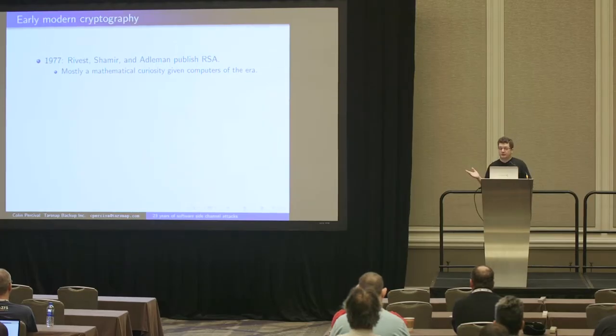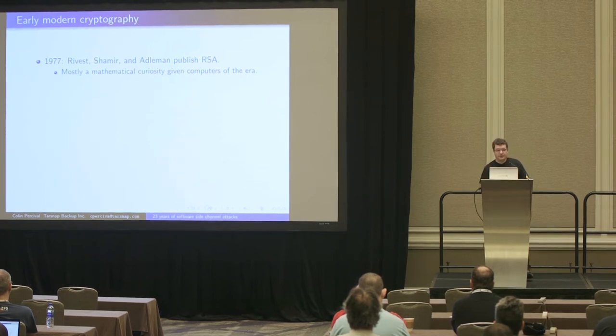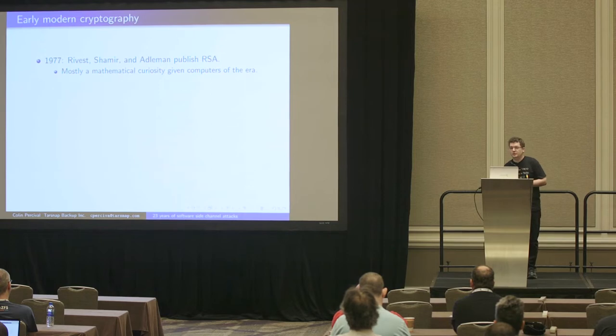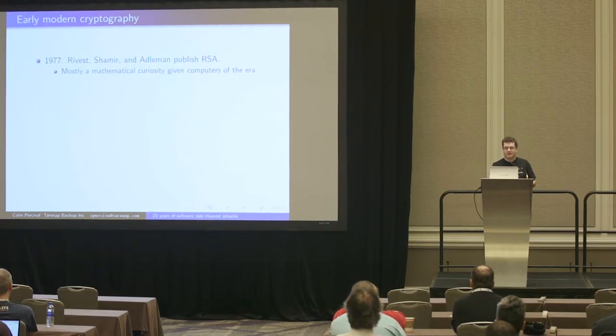So I said 23 years of history. Well, I'm going to start 42 years ago. 1977, Rivest, Shamir, and Adleman published the RSA cryptosystem. This was the first published asymmetric cryptography system. In fact, it had been discovered in the UK, I think, four years before this. But it wasn't published. People inside GCHQ tend to not publish their research. At the time, it was more or less a mathematical curiosity. There wasn't software available for using it. The computers at the time, it would take a long time to do these calculations.